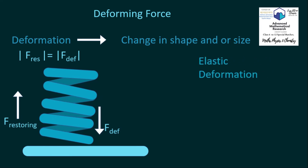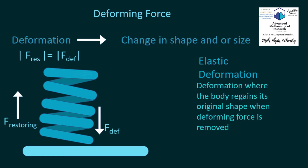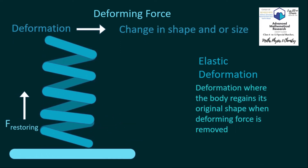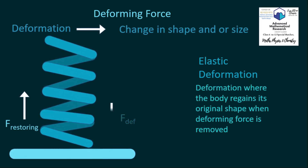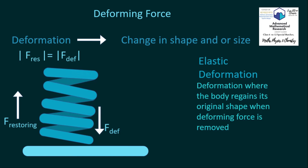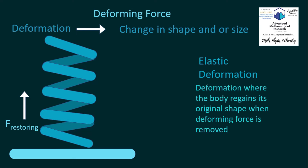What is Elastic Deformation? Elastic deformation is deformation where the body regains its original shape when the deforming force is removed. So in elastic deformation, the body undergoes a change, but once the deforming force is removed, the spring comes back to its original position.